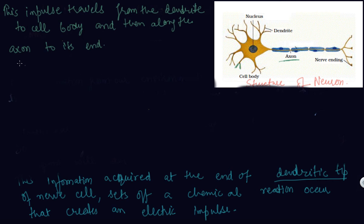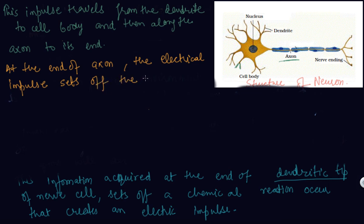At the end of the axon, the electrical impulse sets off the release of some chemicals. Here in the diagram I have shown you, chemicals are released at the end. These chemicals cross the gap or synapse and start an electrical impulse.